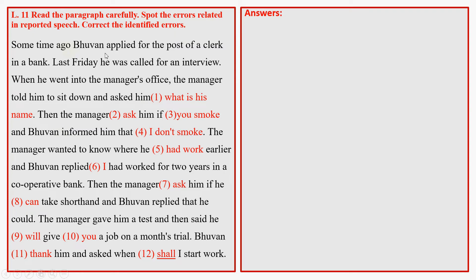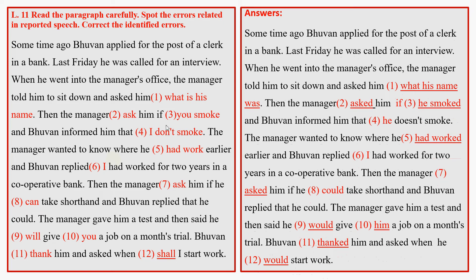The paragraph in exercise 11 is about someone who applied for the post of a clerk in a bank. The manager asks questions one by one. Read the paragraph, identify the errors in reported speech, correct them, and then match your answers with the provided answers to see if any corrections are still needed. Practice it yourself for best results.